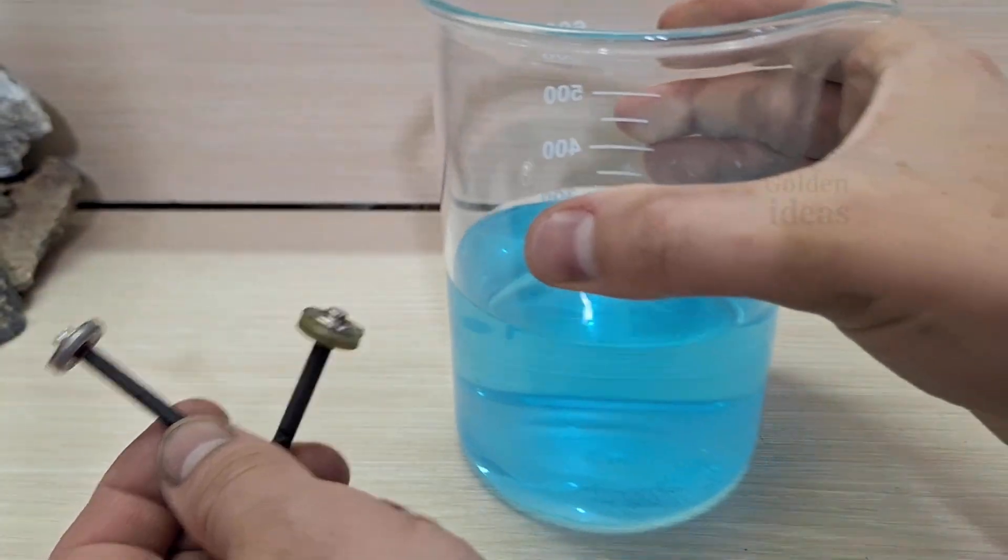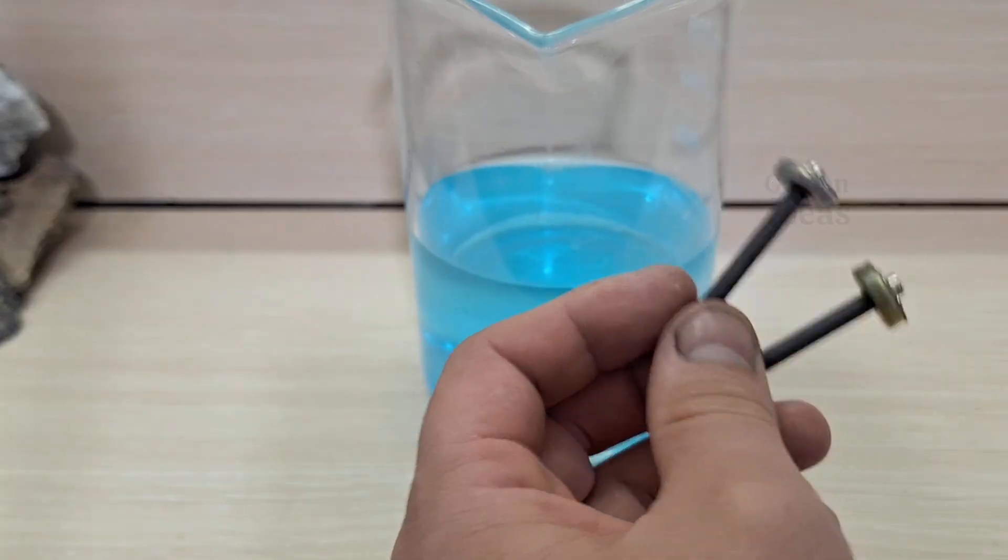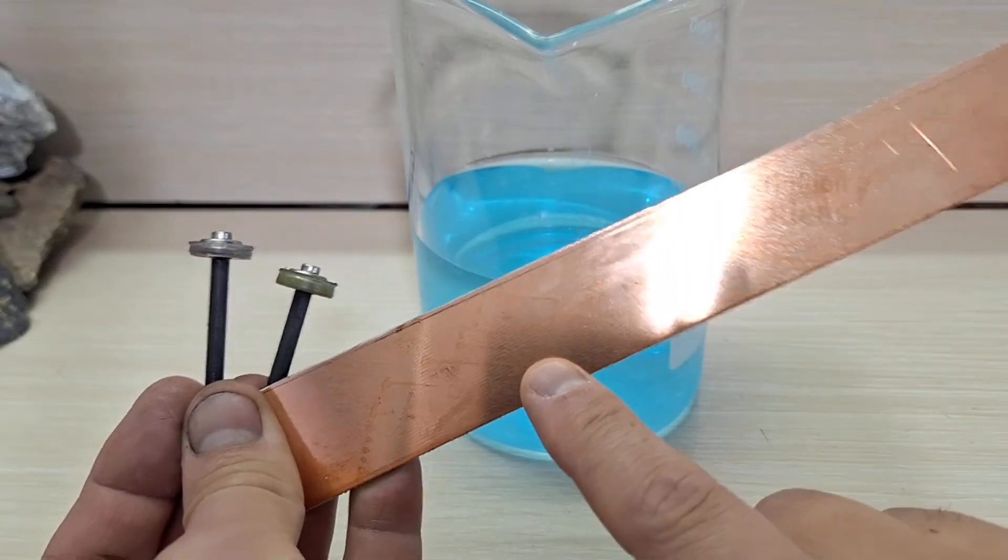Make sure to clean the graphite rods thoroughly to remove any impurities. In a previous video, I used copper and iron plates as electrodes. I've placed the link to that video above, so feel free to check it out if you're interested.